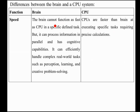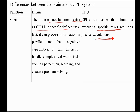In terms of speed, the brain cannot function as fast as a CPU for specific or defined tasks, though it excels at multi-tasking. The brain can process information in parallel and handles complex real-world tasks such as perception, learning, and creative problem solving. CPUs are faster than the brain at executing specific tasks requiring precise calculations, because the CPU is designed for specific tasks and completes them at very high speed compared to the brain.